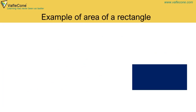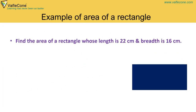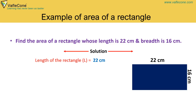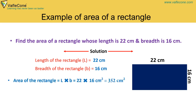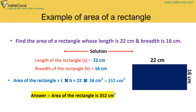Example: Find the area of a rectangle whose length is 22 cm and breadth is 16 cm. Solution: Length L = 22 cm, Breadth B = 16 cm. Area of rectangle = L into B = 22 into 16 cm² = 352 cm². The area of the rectangle is 352 cm².